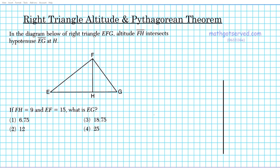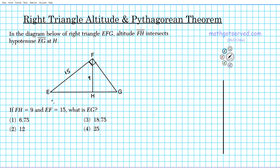Let's go ahead and populate the diagram with the measures that we have. We know that FH is nine units long, so this portion right here is nine units. Don't forget this is a right triangle, so this angle is ninety degrees. And EF — this side right here — is fifteen units long. We are asked to find what is the entire length from E to G.